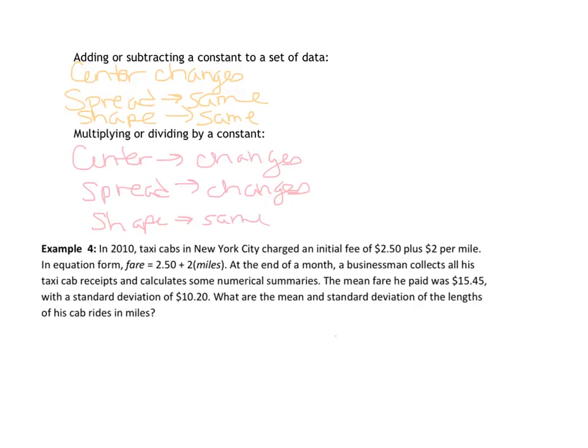So I have a fun little problem for you. So we know that in 2010, taxi cabs in New York charged an initial fee of $2.50 plus $2 per mile. You have an equation for that. And this businessman finds that the mean fare that he paid was $15.45. The standard deviation of the fare is $10.20. So we want to find the mean and standard deviations of the lengths of his cab ride in miles. If you feel like you can do it, go for it. Pause this video and try this problem. Otherwise, I'm going to go ahead and go through it.